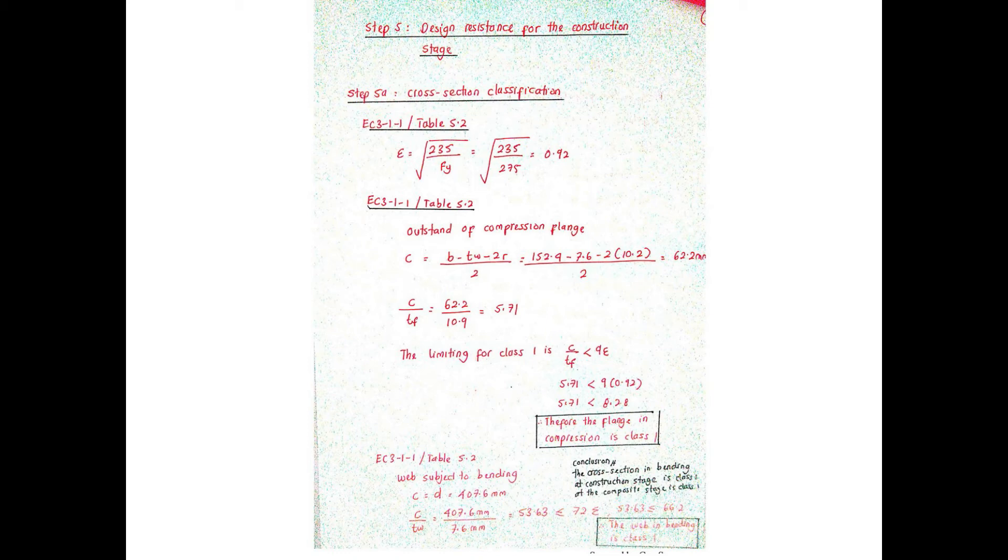Refer to table 5.2, EC3 part 1-1, we finally determined that the flange and the web of the beam is categorized under class 1 respectively.